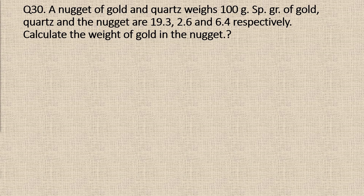Question 30. A nugget of gold and quartz weighs 100 grams. The specific gravity of gold, quartz, and the nugget are 19.3, 2.6, and 6.4 respectively. Calculate the weight of gold in the nugget.